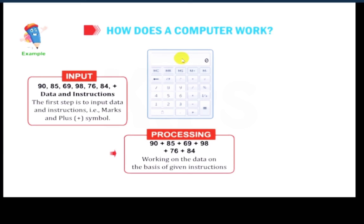After that, second step is processing: working on the data on the basis of given instructions. Just like 90 plus 85 plus 69 plus 98 plus 76 plus 84.